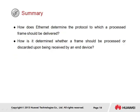In summary for this section: How does Ethernet determine the protocol to which a processed frame should be delivered? Frames carried over Ethernet networks contain a type field that is used to reference the next protocol to which data is to be sent for processing — examples given in this section include IP and ARP. How is it determined whether a frame should be processed or discarded upon being received by an end device? The receiving host analyzes the destination MAC address in the frame header. If the MAC address of the host interface does not match the destination MAC field, or is not a multicast address the host is listening for, or the destination MAC is not a broadcast address, the frame will be discarded.